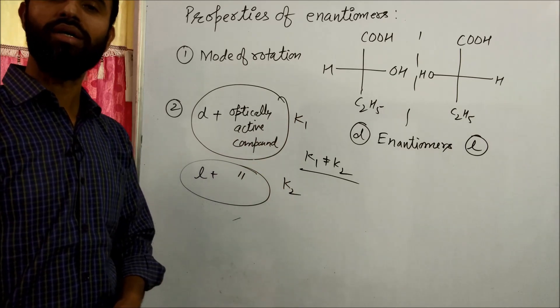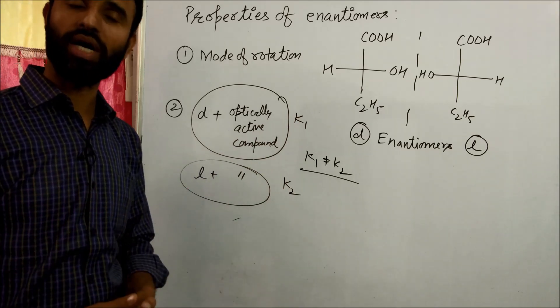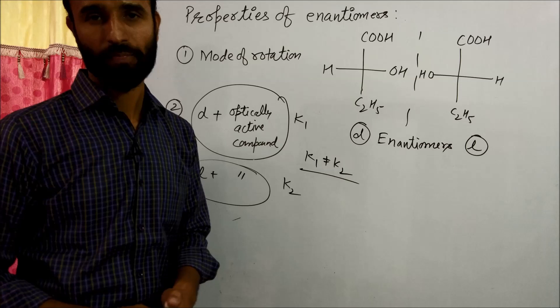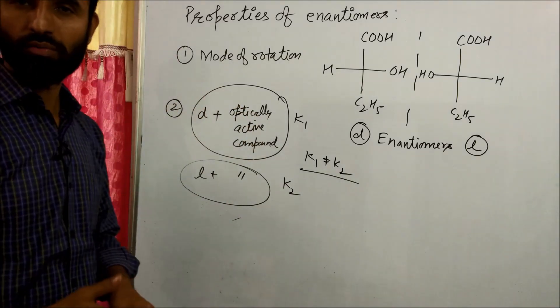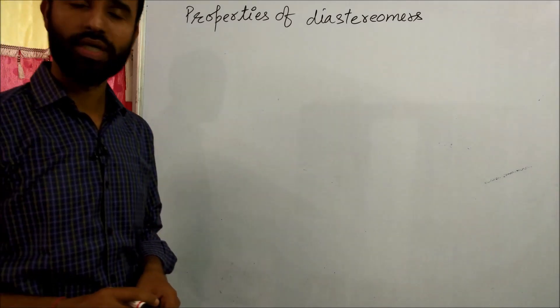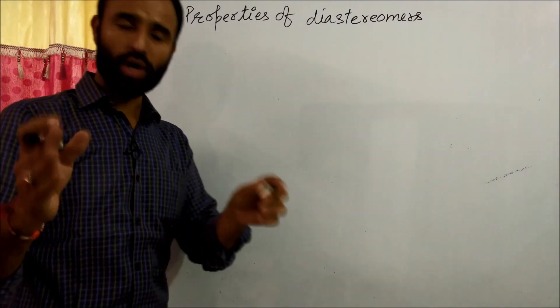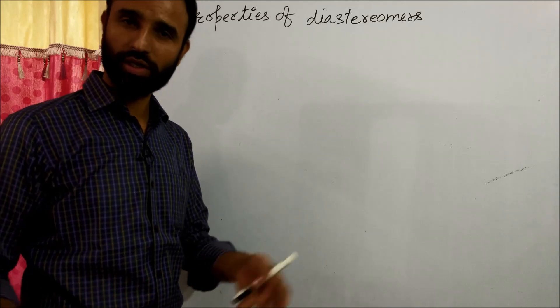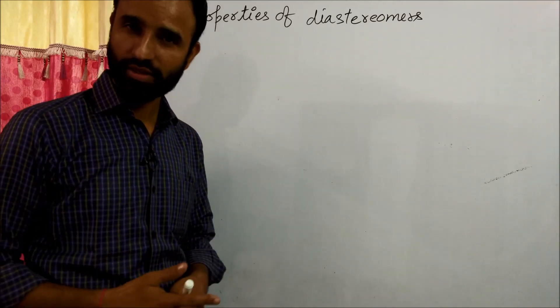So that is the basic properties of enantiomers. Properties of diastereomers. So one type of diastereomers we have already covered, that is cis and trans. Their physical properties are entirely different in case of diastereomers containing chiral center.